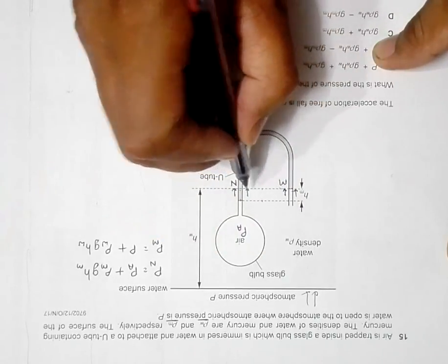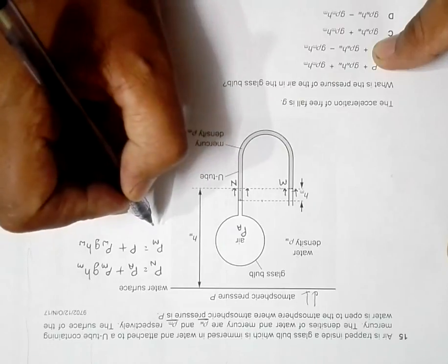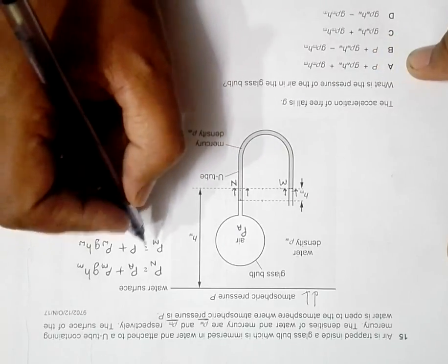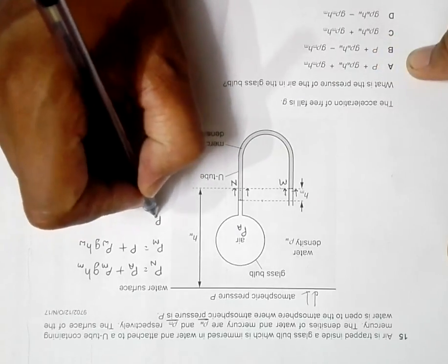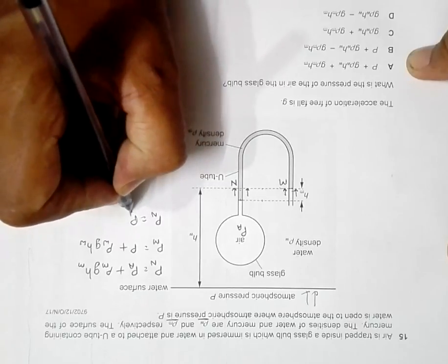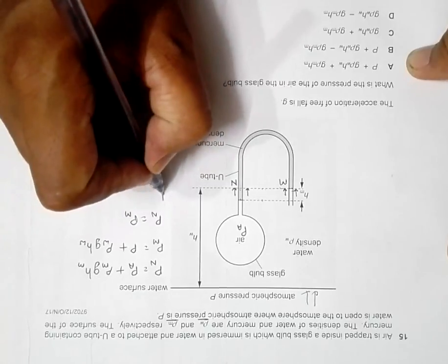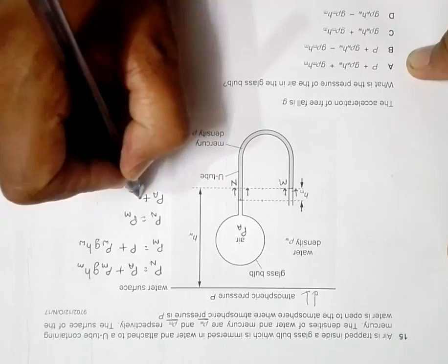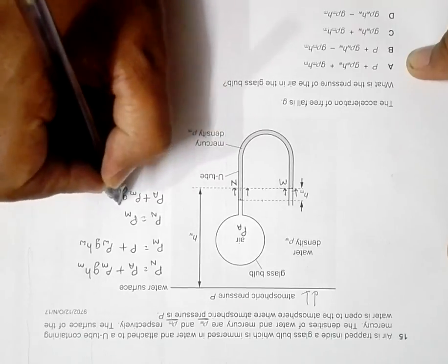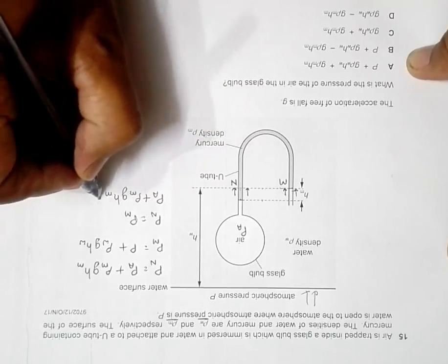Now see, pressure at this level should be equal, so we should have pressure N is equal to pressure M. So this will give us pressure A plus rho m, g, hm should be equal to P plus rho w, g, hw.